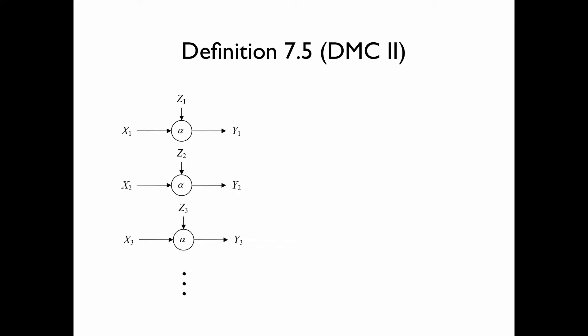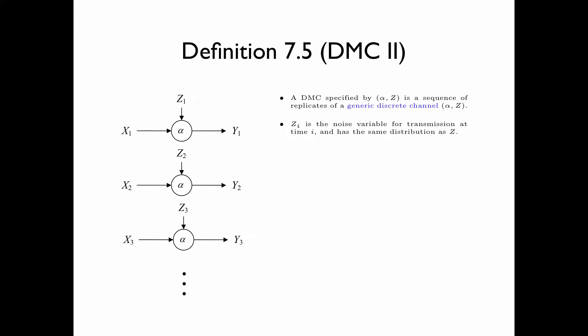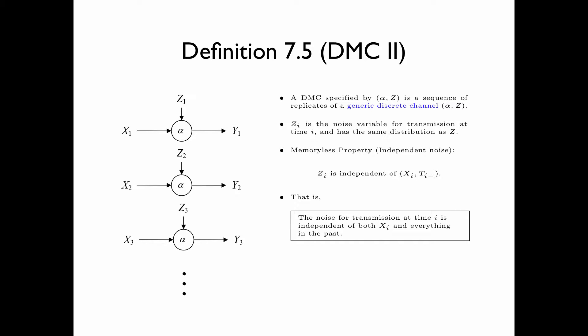We now introduce an alternative definition of a DMC, called DMC2, based on our second definition of a discrete channel. A DMC specified by the pair (alpha, z) is a sequence of replicas of a generic discrete channel alpha z. Zi is the noise variable for transmission at time i and has the same distribution as z. The memoryless property specifies that Zi, the noise variable for the i-th transmission, is independent of xi, the input at time i, and ti minus, all the random variables generated in the system before xi.